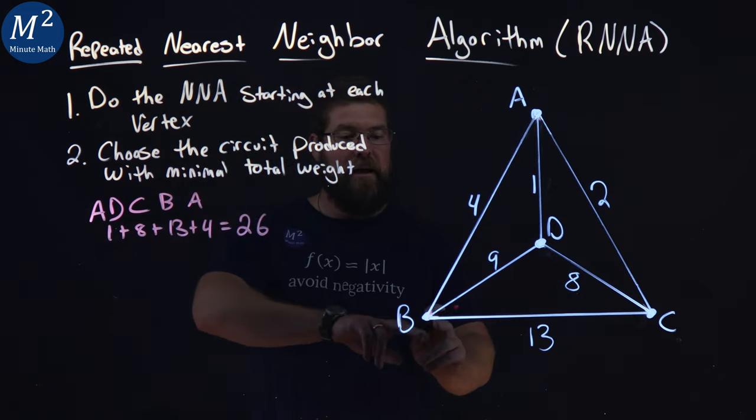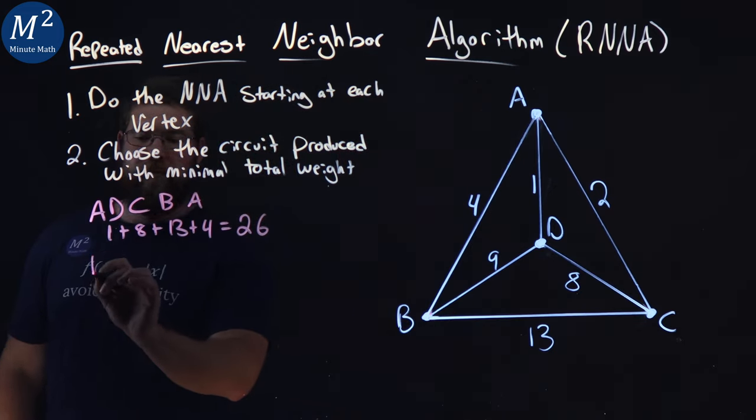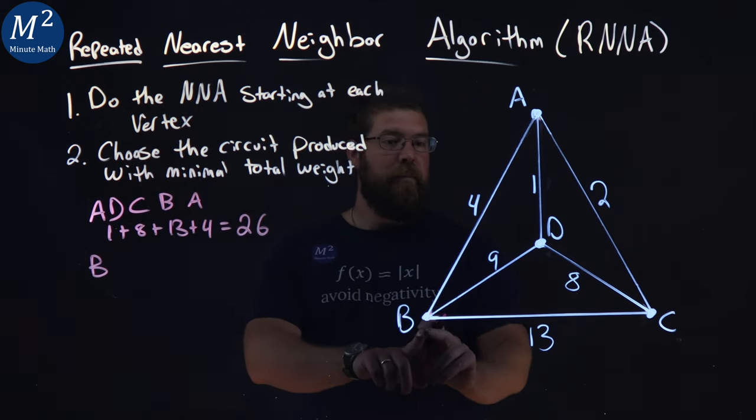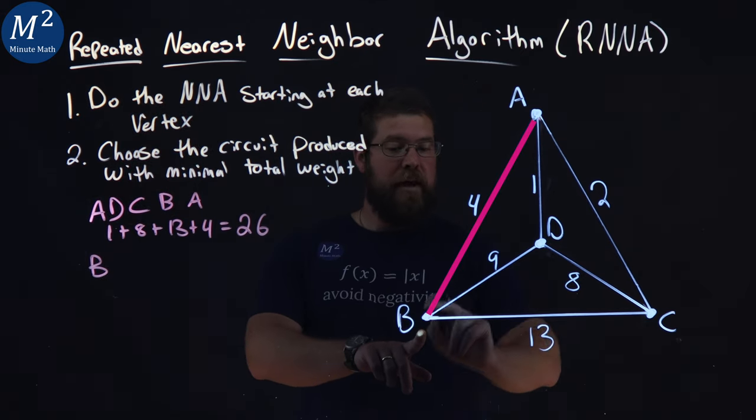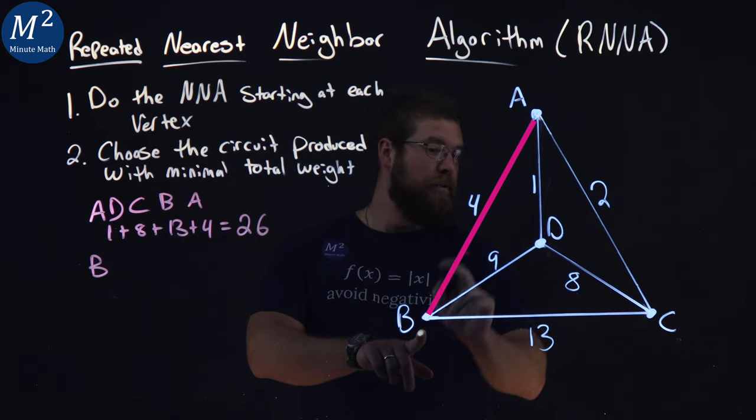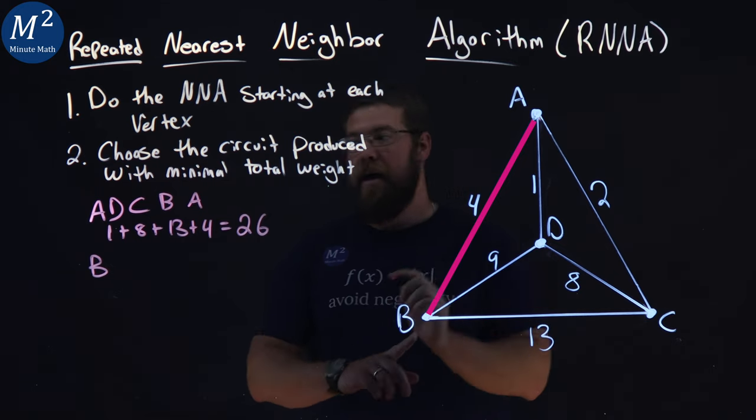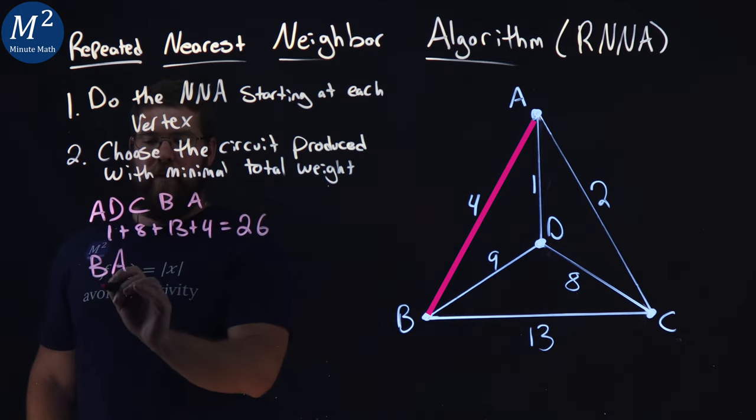So let's apply that now starting at B. Our nearest neighbor for B is to A. We're going to A, it's the nearest neighbor, lowest weight. So A, that has a weight of 4.